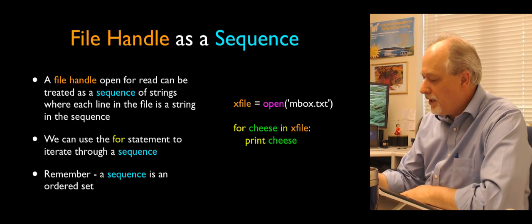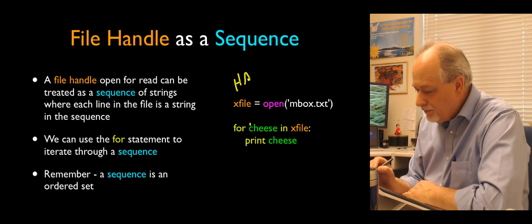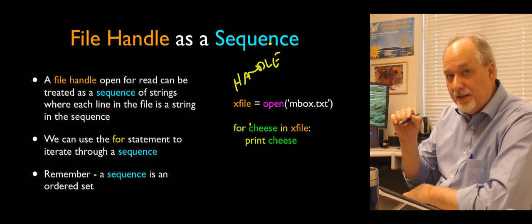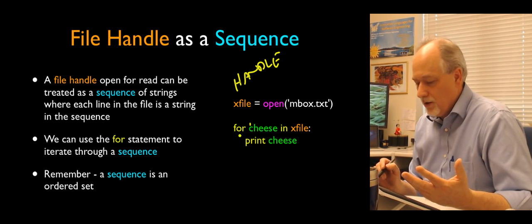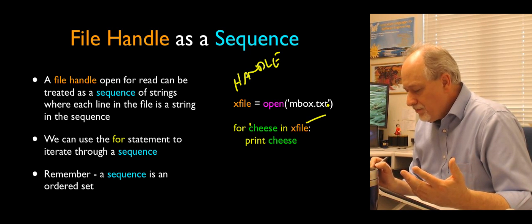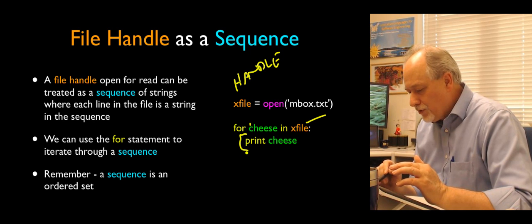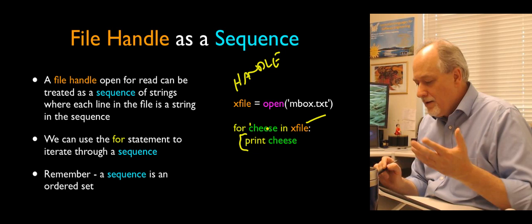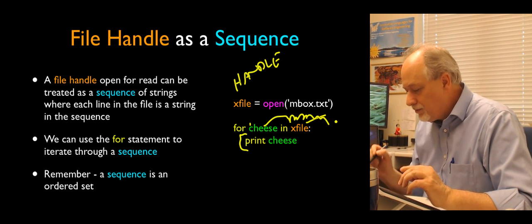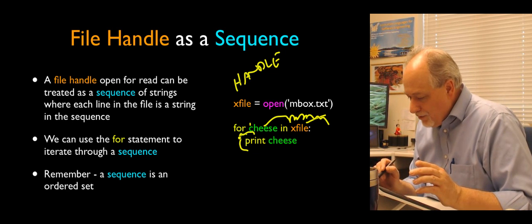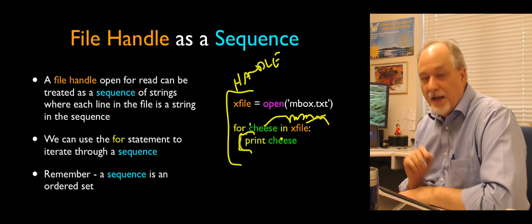To read a file, we open it — `xfile = open(...)` — and the handle is how we read the data. The coolest way to read a text file with multiple lines is using a for loop: `for line in xfile`. Python knows automatically to advance to the next line each iteration and stops when the whole file is read. These three lines open a file and read every line in it — that's how you do it.